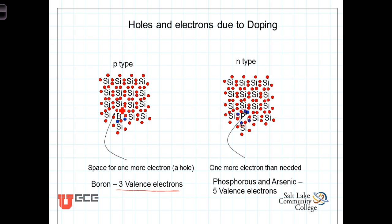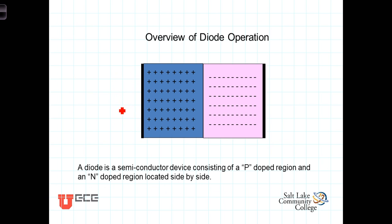This process consists of creating areas that have an abundance of holes — places where there's room for one more electron — and areas in the semiconductor that have a surplus of electrons. We refer to those areas with extra electrons as having extra negative charge, but keep in mind that at this point it's still electrically neutral. There isn't necessarily a charge separation or a voltage at this point. We'll get into what happens in the manufacturing process at this interface in the next video.